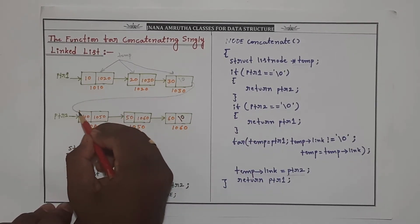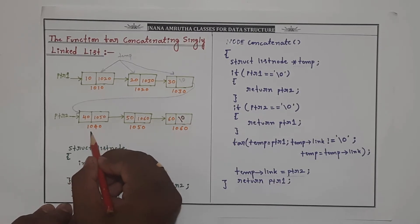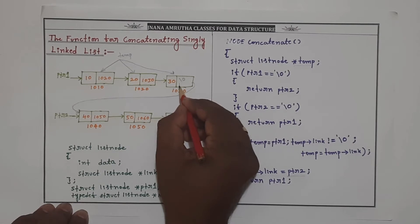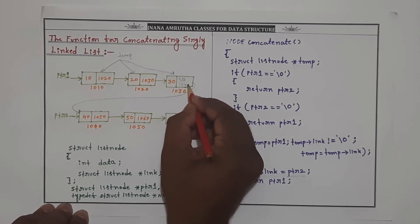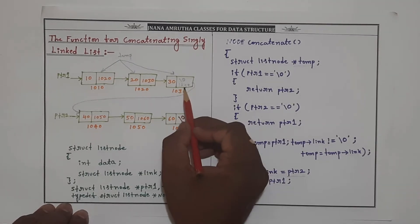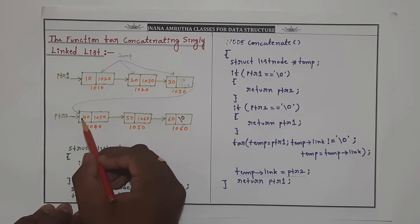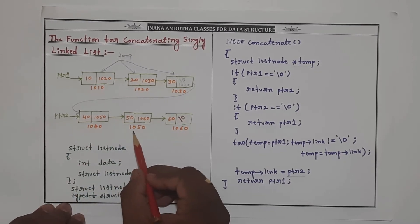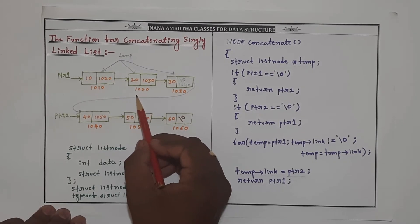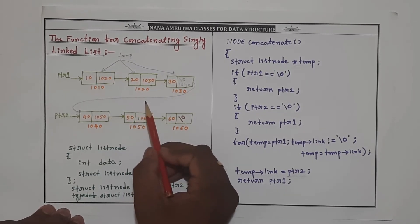Temp of link is now pointing to PTR2. The address of PTR2 is 1040. We write 1040 into temp of link. By establishing this connection, we are appending list 2 to list 1. Now we will observe the code for this.